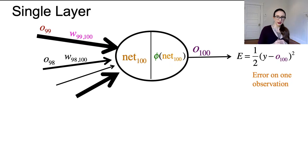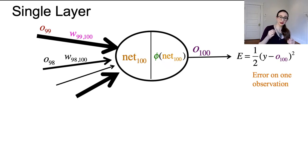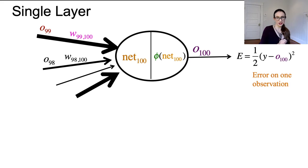Net100 is the sum of the weighted outputs from the other neurons that feed into this neuron. So net100 is the sum of O99 times W99100, plus O98 times W98100, and so on. Then net100 goes through the activation function, becoming phi of net100, which is the same thing as O100, the output of the neuron. The error is one-half times (Y minus O100) squared. I've placed a one-half in front of the error rate — it doesn't change the minimizer, but it's helpful when we take derivatives.